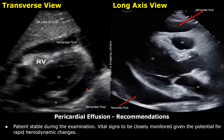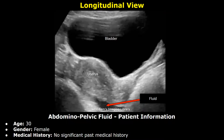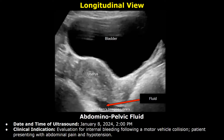This is an example report regarding abdominal/pelvic fluid. The patient is 30 years old, gender female, with no significant past medical history. Date and time: January 8, 2024, 2:00 PM. Clinical indication: evaluation for internal bleeding.